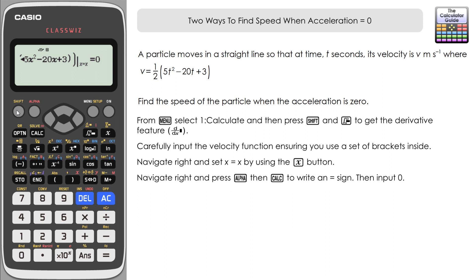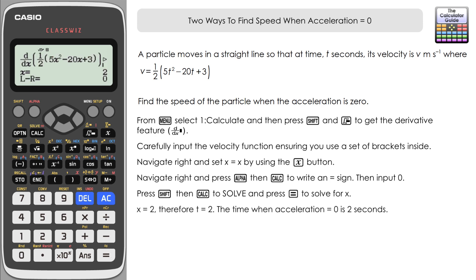So once we've got that in, we're ready to solve. So it's shift and solve, and you'll just have your previous value or your default value of x here. Just ignore that, just press equals, and it will solve for x given as a new value. And here we've got x equals 2, which means t equals 2. So our time is 2 seconds when the acceleration of the particle equals zero.